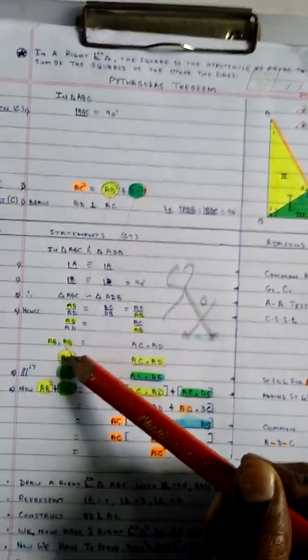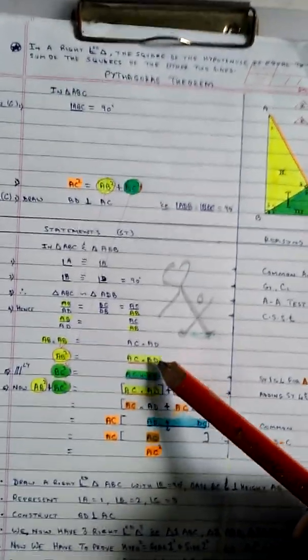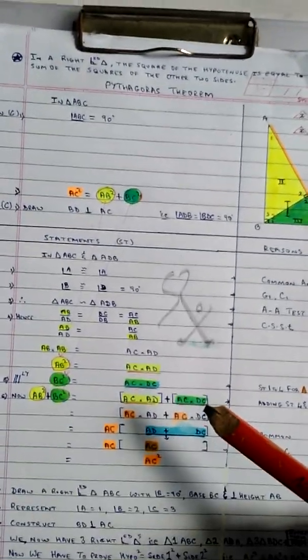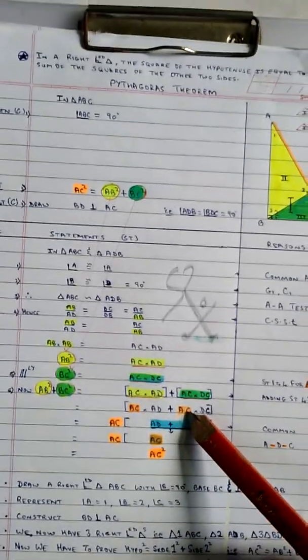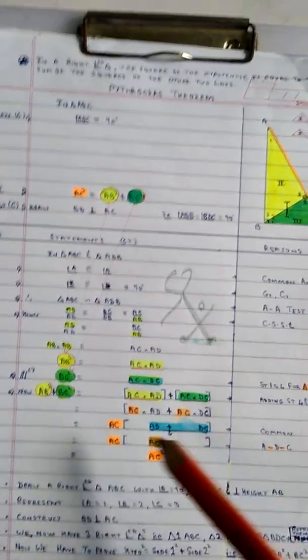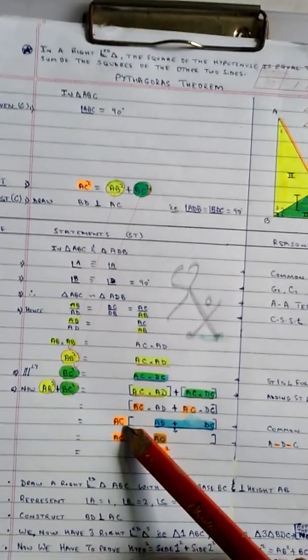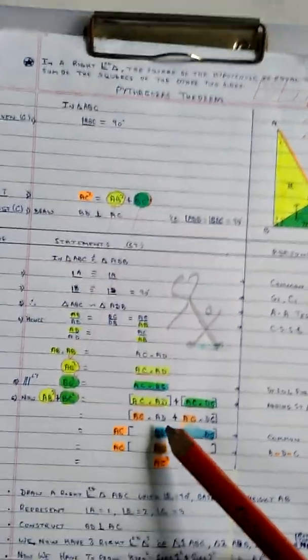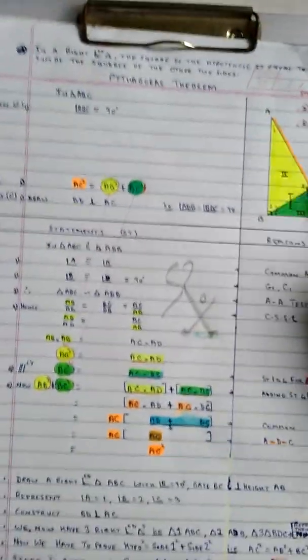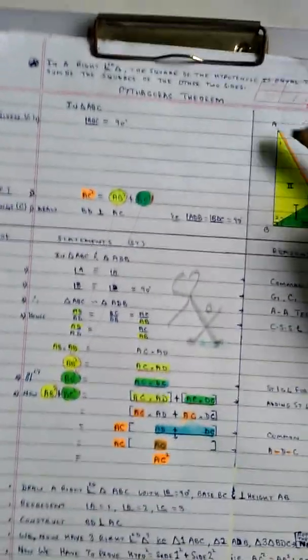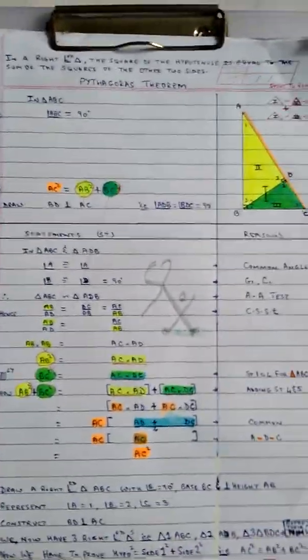On the right side, AC × AD + AC × CD. AC is common, so factor it out: AC(AD + DC). Since AD + DC = AC, we get AB² + BC² = AC². Hence proved. Thank you.